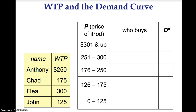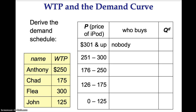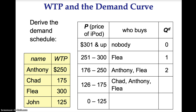Now let's derive the demand schedule using willingness to pay. When price is greater than $301, nobody will buy and quantity demanded is zero. When price is between $251 and $300, Flea will buy and quantity demanded is one. When price is between $176 and $250, Anthony and Flea will buy and quantity demanded is two. When price is between $126 and $175, Chad, Anthony, and Flea will buy and quantity demanded is three. When price is below $125, John, Chad, Anthony, and Flea will buy and quantity demanded is four.